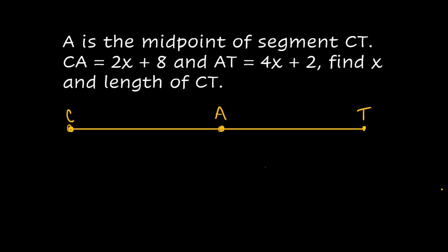So the distance CT to A is 2X plus 8 and from A to T is 4X plus 2. But because it said that A is a midpoint, we know that these two segments are actually equal to each other or you can call them congruent, but we know that the measures are equal to each other. So that sets up our problem for us to say that 2X plus 8 equals 4X plus 2.